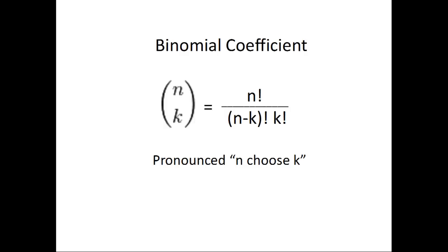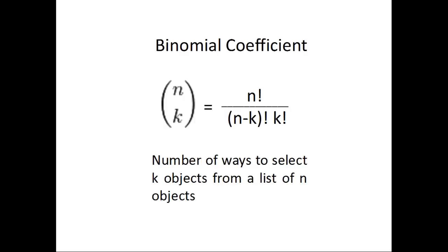As a review, the binomial coefficient pronounced n choose k is the number of ways to choose k objects from a list of n objects.